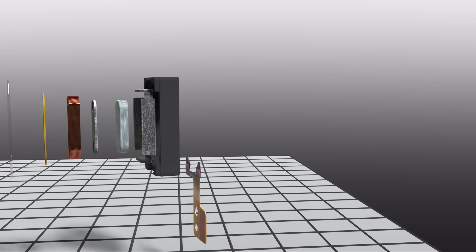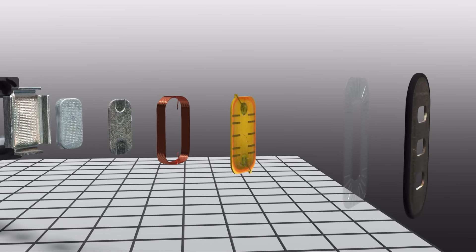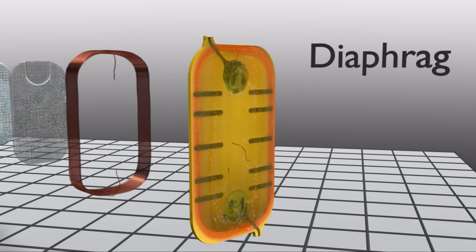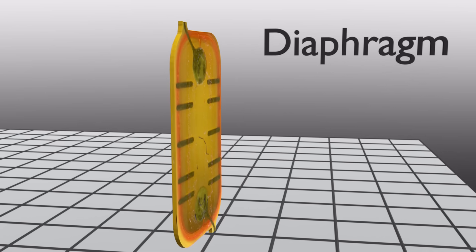The first key component is the diaphragm. It is a thin piece of rigid plastic that moves back and forth to generate sound waves.